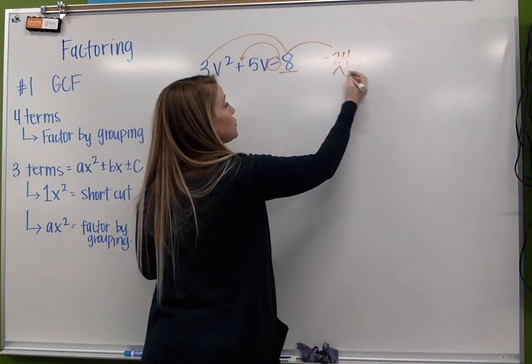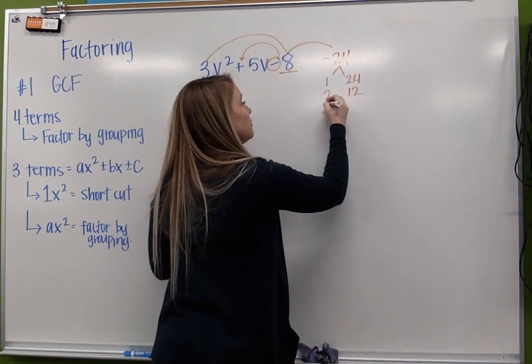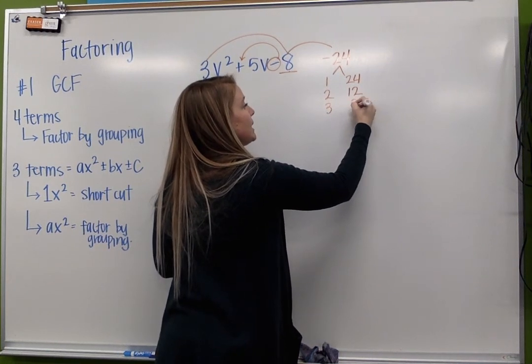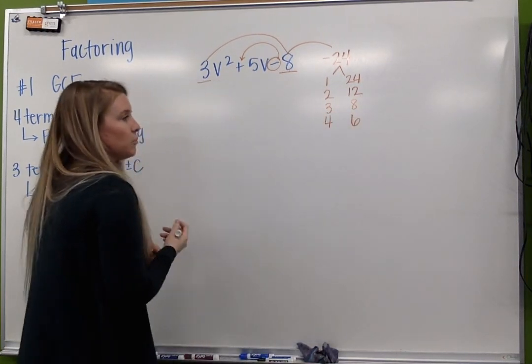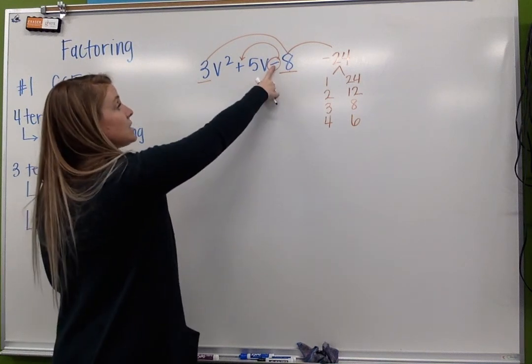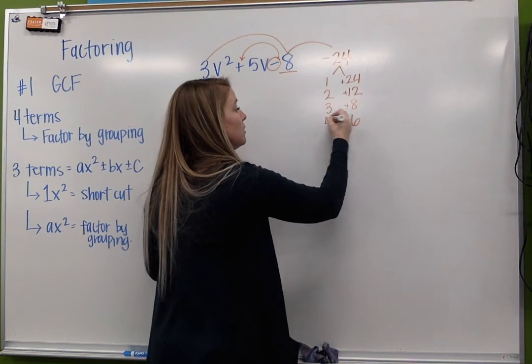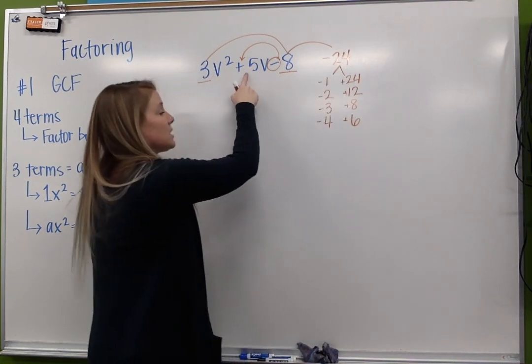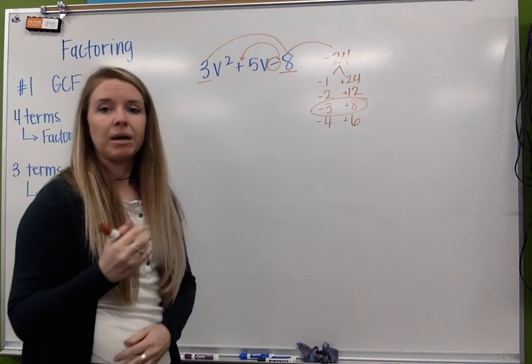So factors of 24: 1 and 24, 2 and 12, 3 and 8, 4 and 6. I think we're solid there. Again, signs are opposite. Larger 1 is positive. So which set is going to give me my positive 5? That's going to be my negative 3 and my positive 8.